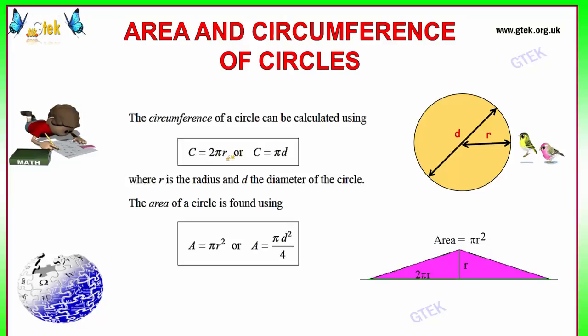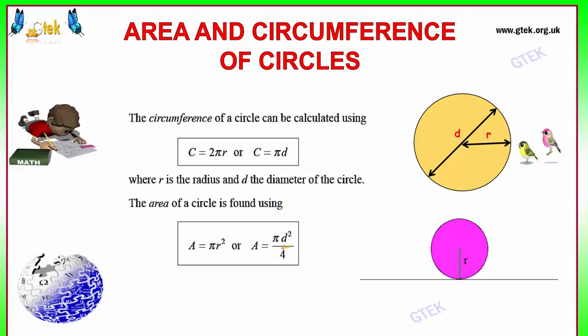The area of a circle can be calculated using the formula pi r square. Since r is equal to d by 2, pi d square by 4 is also a formula we can use.